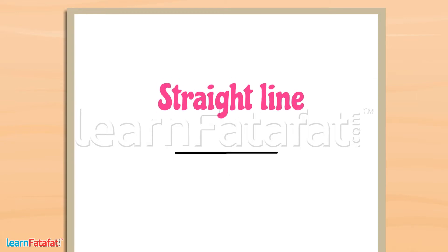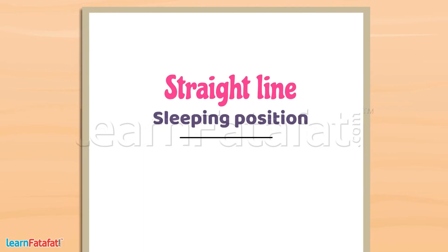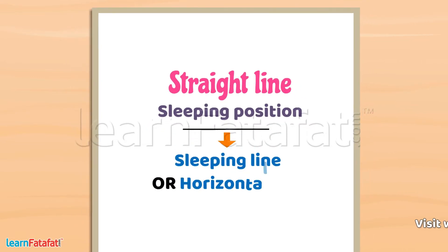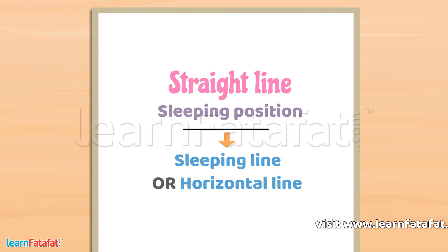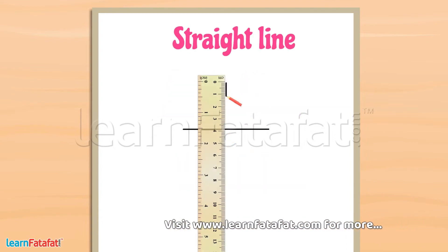This is a straight line. But this line is in a sleeping position, so it is called a sleeping line or a horizontal line. Now let's draw a straight line like this.